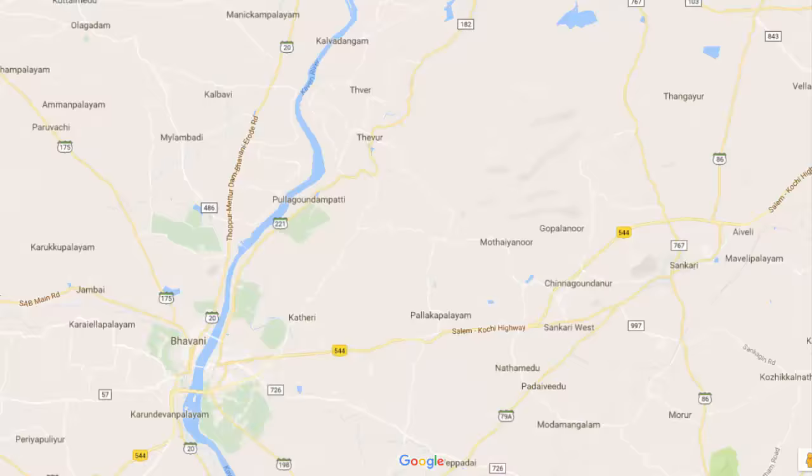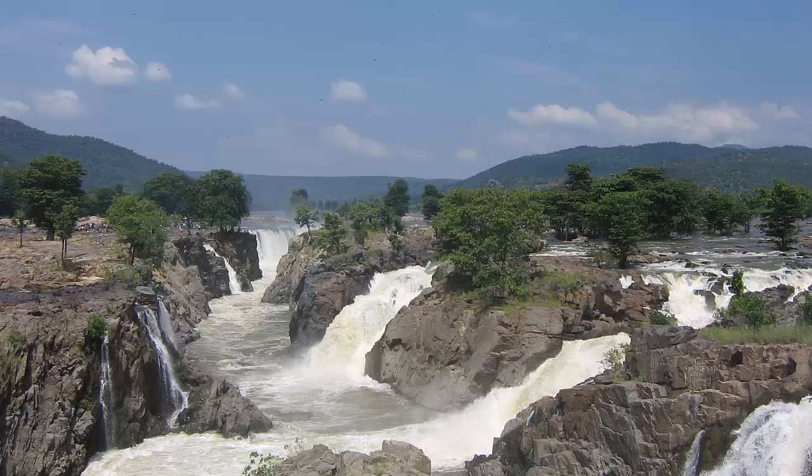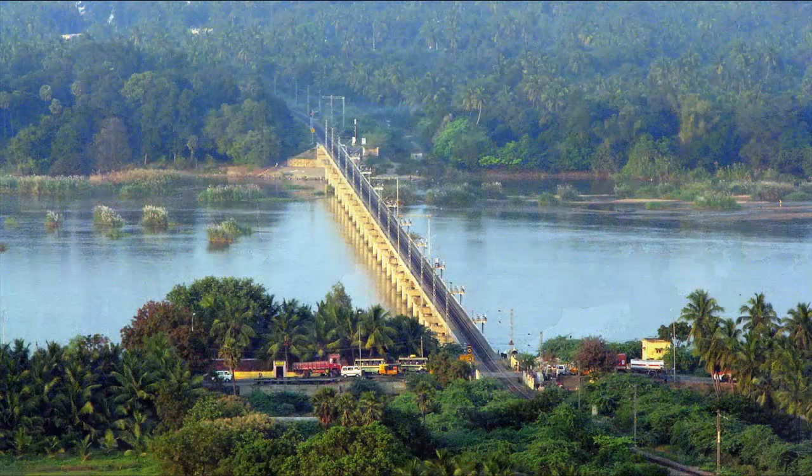Now you can figure out which are the two states fighting over the river Kaveri. The sharing of water of the river Kaveri has been the source of conflict between the states of Karnataka and Tamil Nadu. How does it all start? After all, a river is nature's gift — how can someone command a river where to flow and how much to flow? It sounds as if there is more to it.